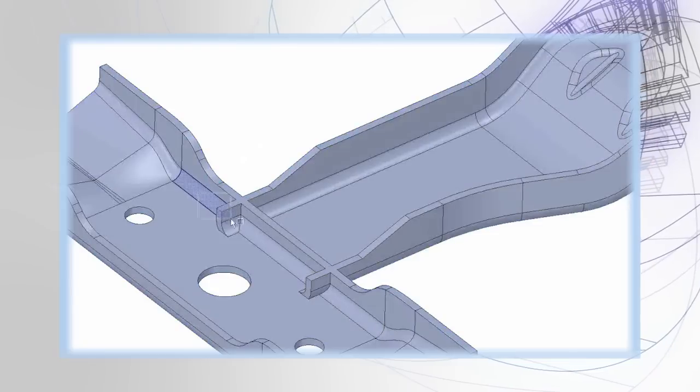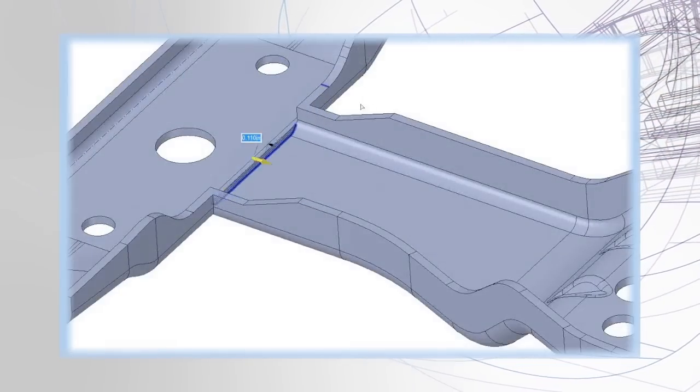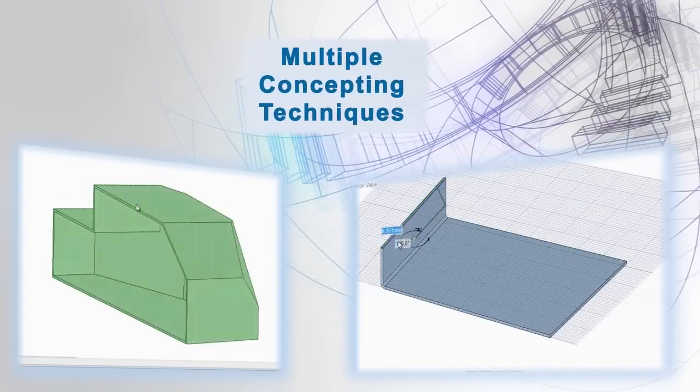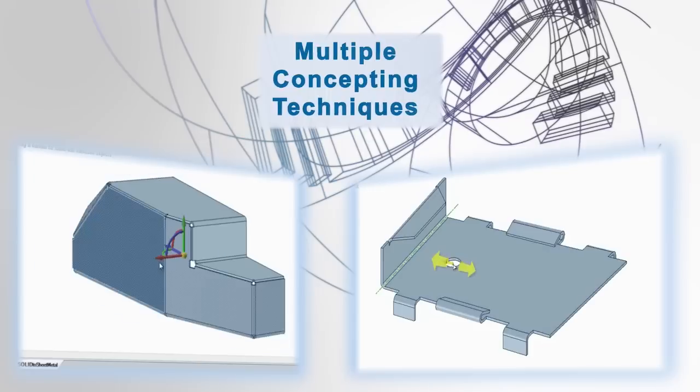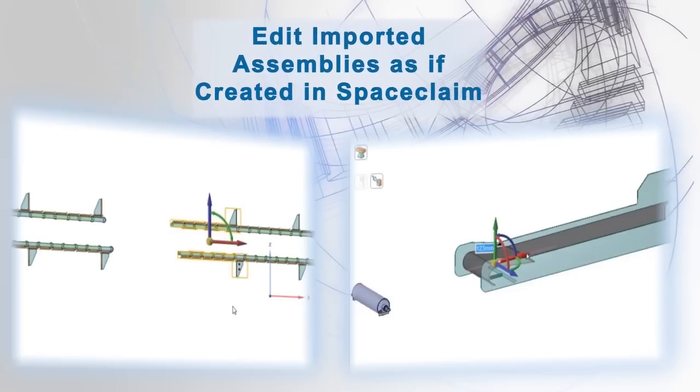Whether concepting a new machine part, sheet metal models, or designs in the context of large assemblies, watch the main tools like pull, move, fill, and combine edit native or imported geometry alike. And because these direct editing tools are so simple, over 70% of our users teach themselves the software with no formal training.